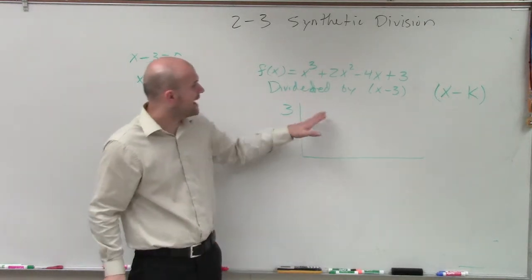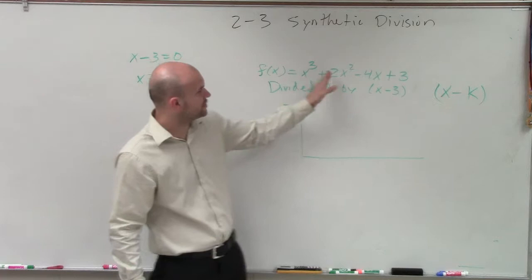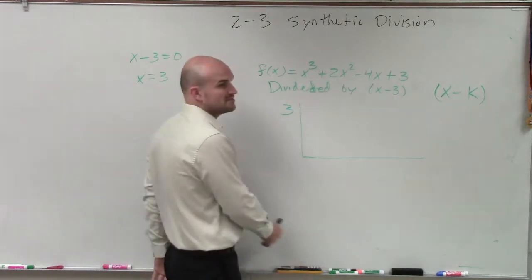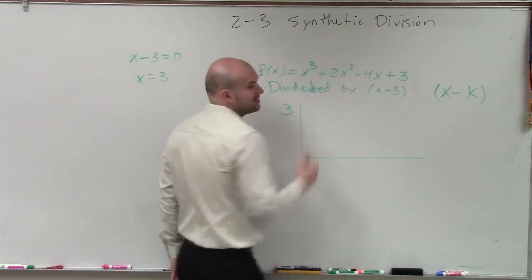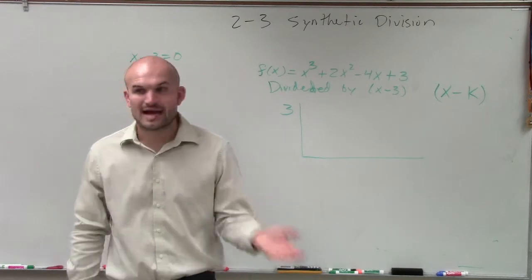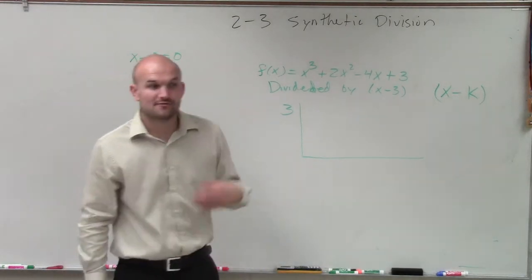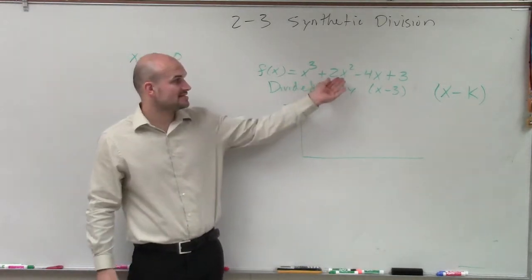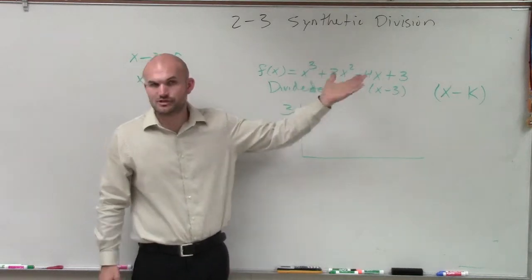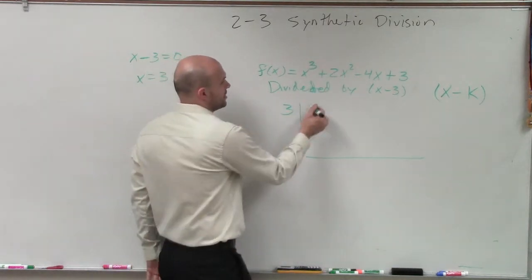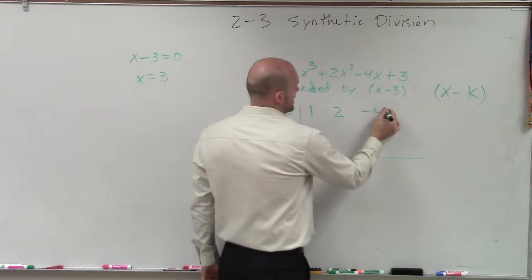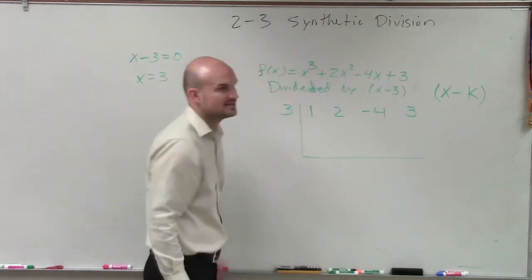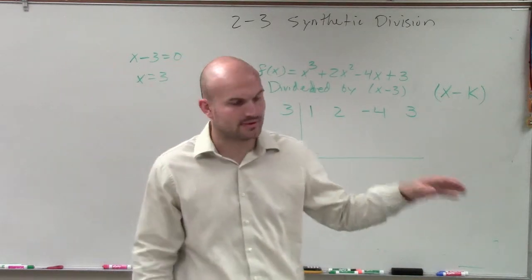Now to apply synthetic division, we take the coefficient of each one of our terms in our polynomial, make sure our polynomial is in descending order, and that we're not missing any terms. If we are missing any terms, like let's say we're missing x squared, then we need to make sure we put a 0 in there. But I'll have 1, 2, negative 4, and 3. So we just take the coefficients and line them up top.